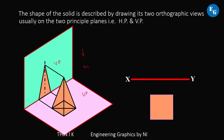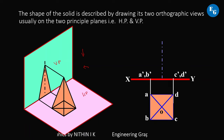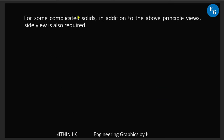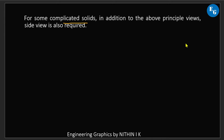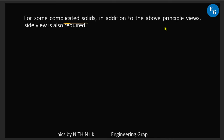The projection consists of the top view and front view. For some complicated solids, in addition to the above principal views, a side view is also required, as well as other auxiliary views, bottom view, and rear view.